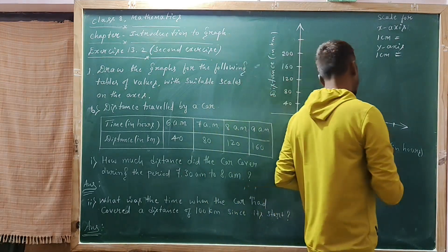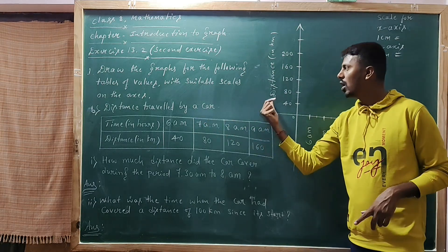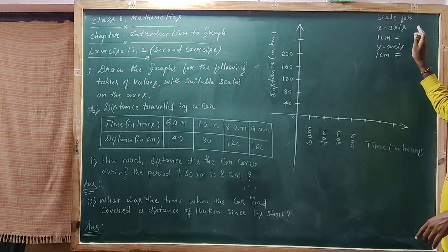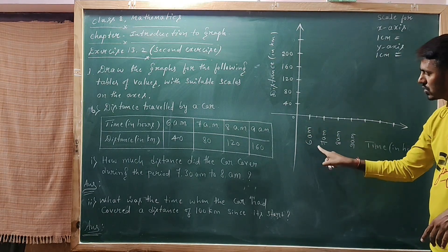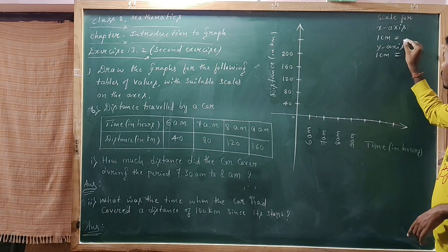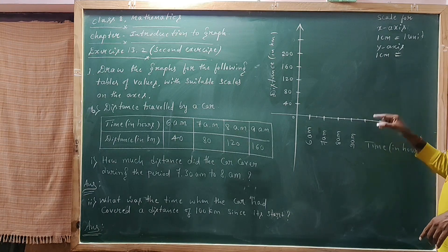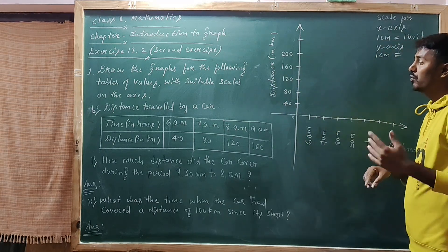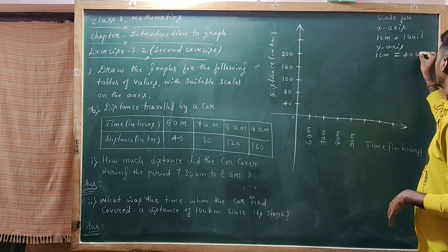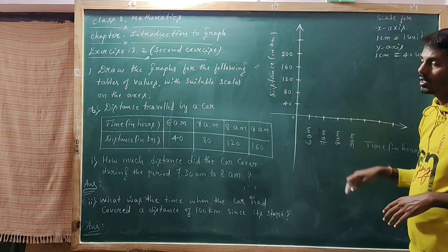We need to answer two sub-questions by observing the graph. Represent time on the x-axis and distance traveled on the y-axis. Scale for x-axis: 1 centimeter equals 1 unit (6 to 7, 7 to 8, 8 to 9). Scale for y-axis: 1 centimeter equals 40 units — so 40, 80, 120, 160. You can also choose 20, 40, 60 depending on the length of your graph paper.